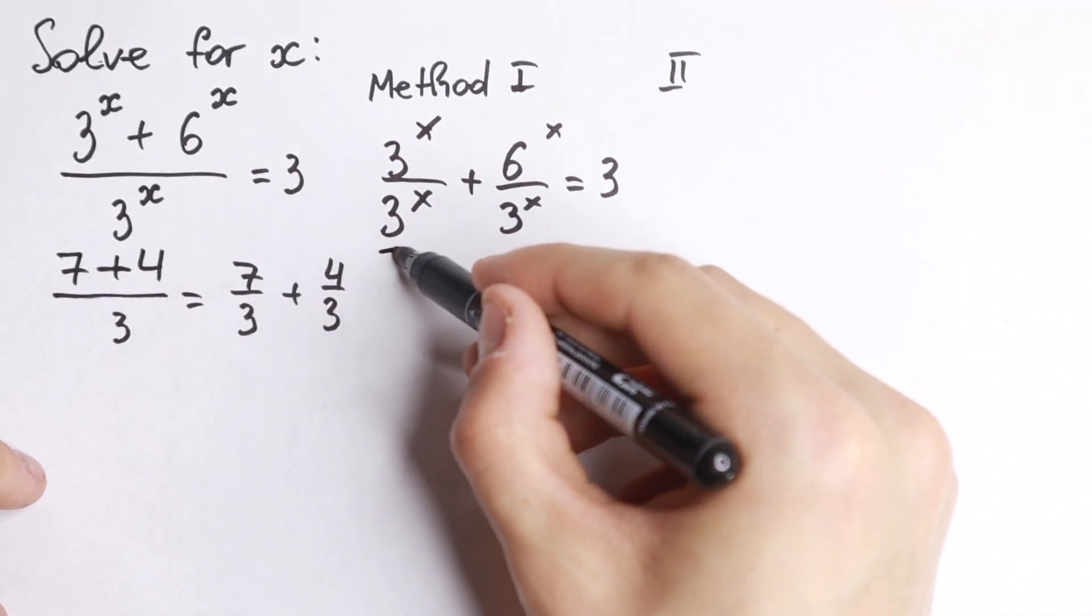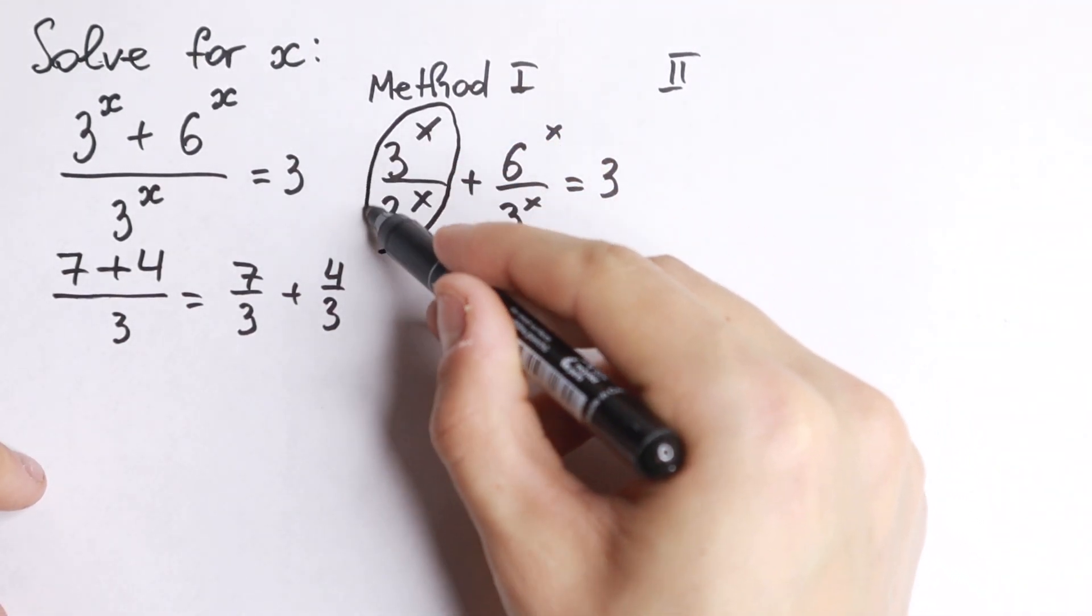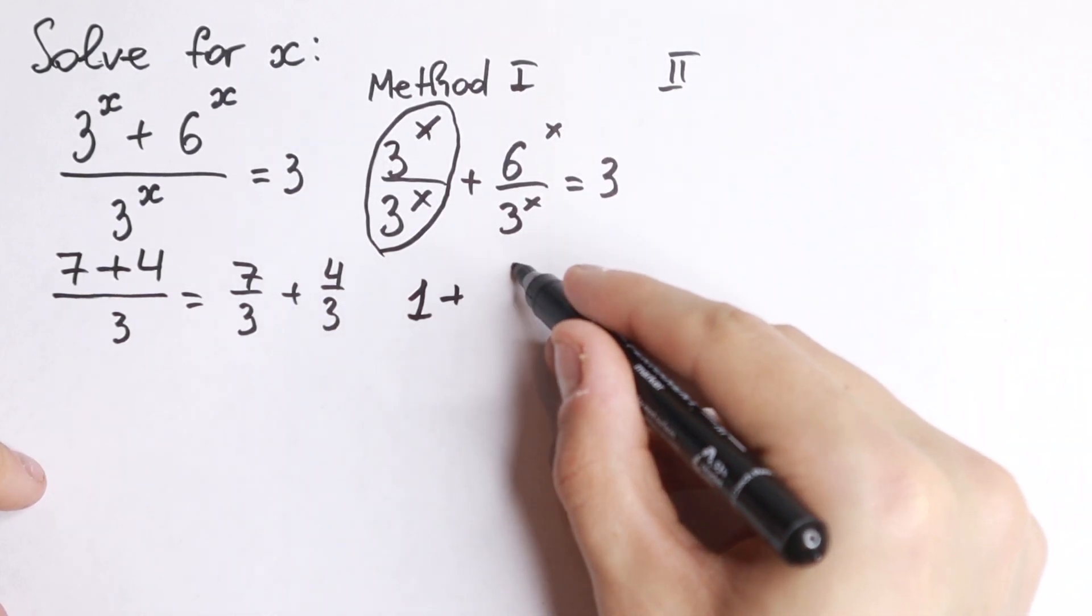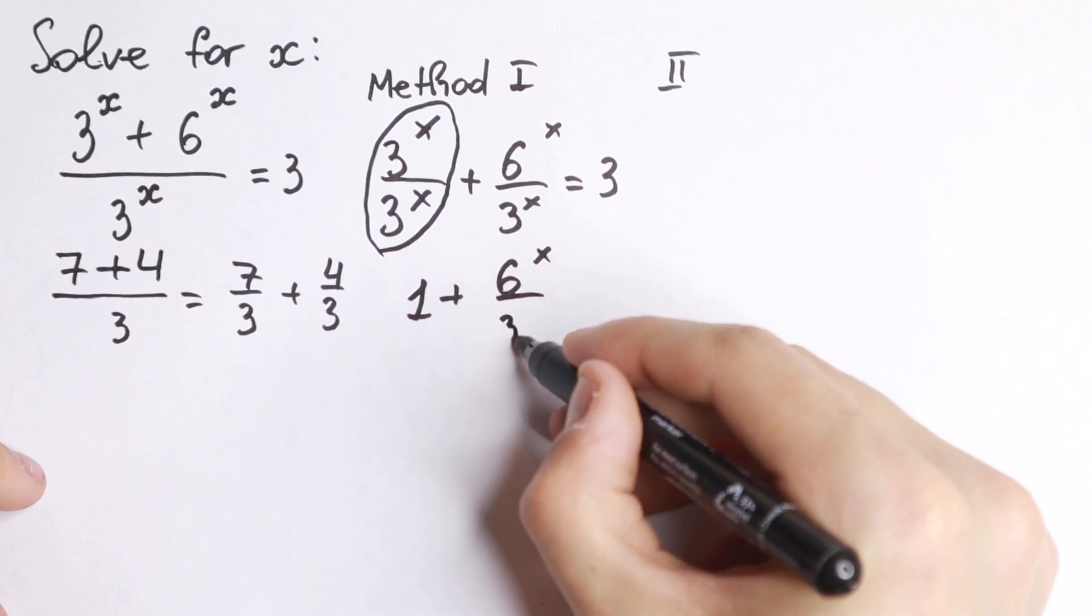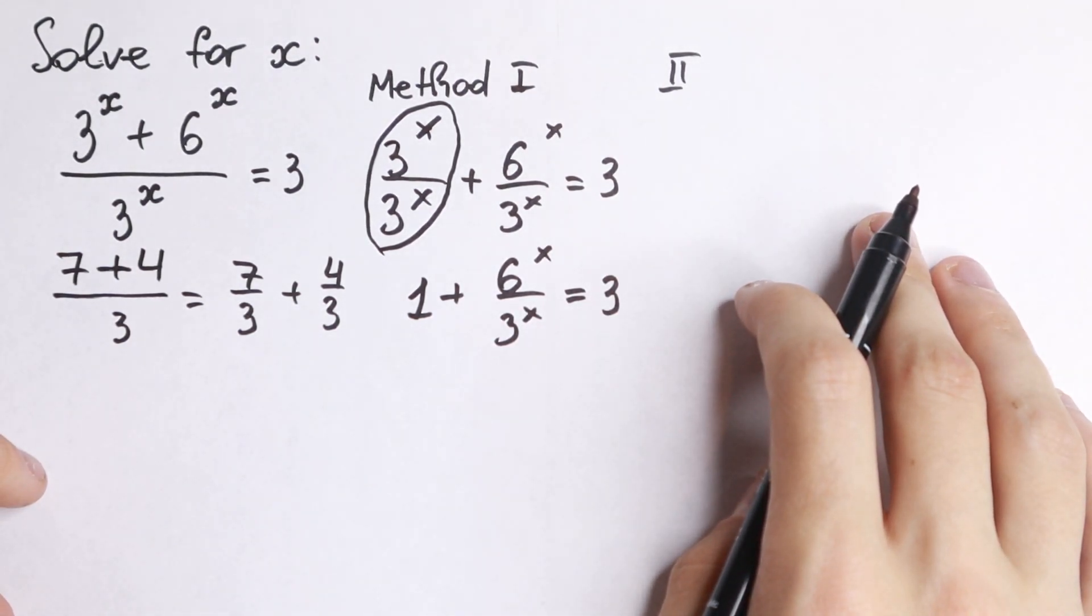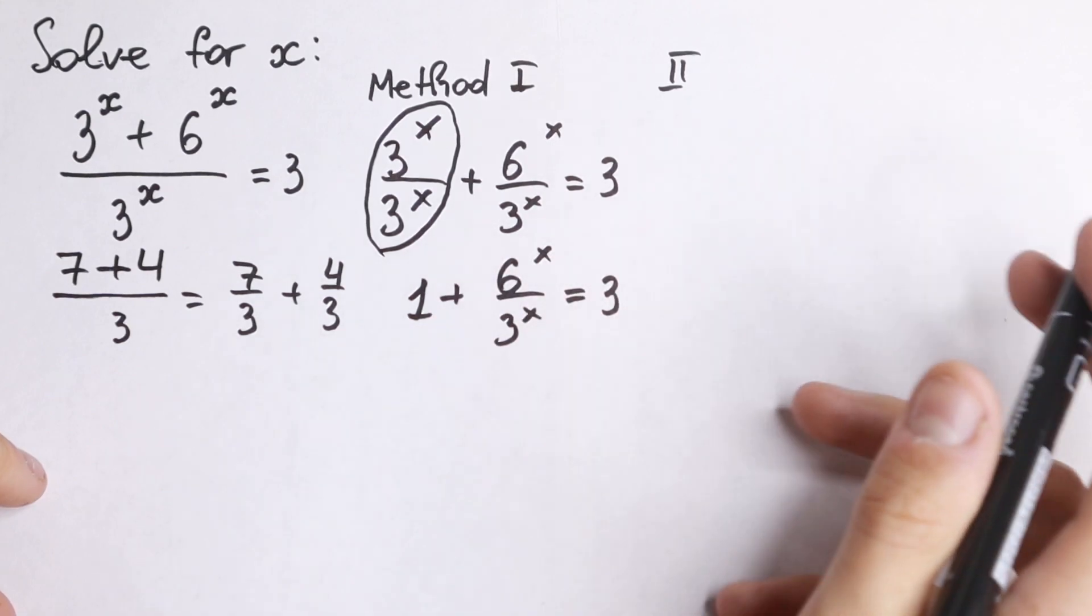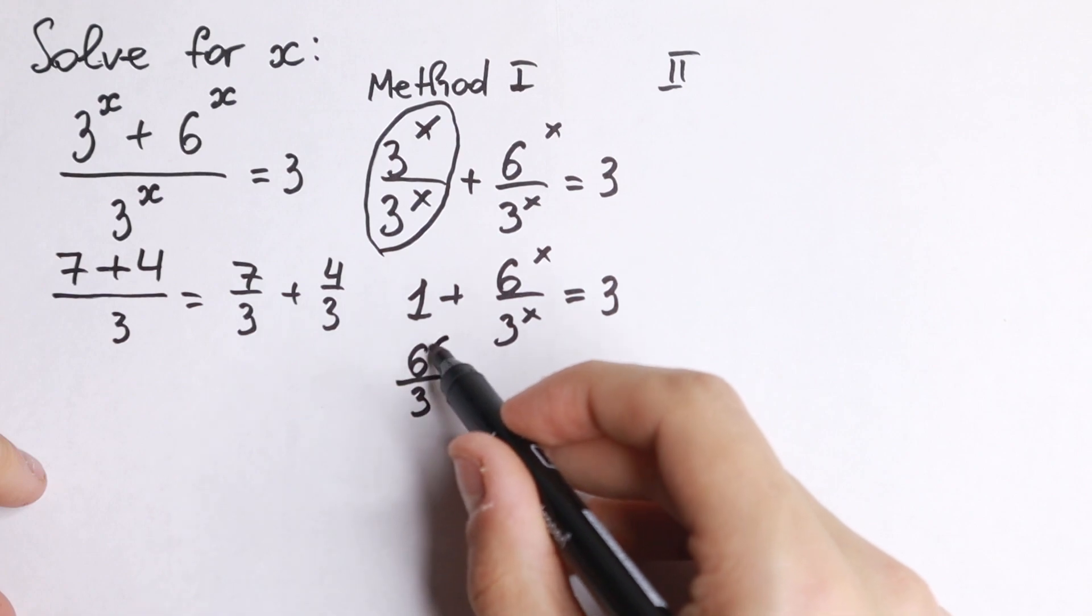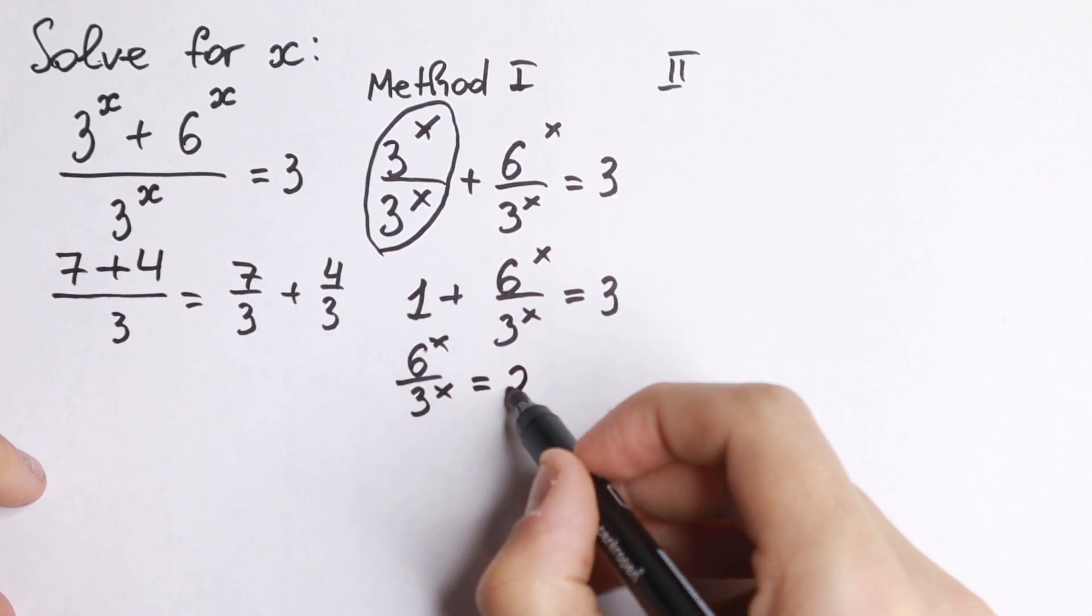If we divide this element by this, we will have the same denominator. The denominator will have 1 plus 6 to the x over 3 to the x equal to 3. What we're going to do next? Bring this one on the right hand side and we will have 6 over 3 to the x equal to 2.